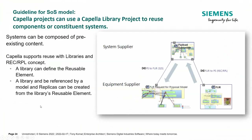The next guideline: Capella projects can use the Capella library project to reuse components or constituent systems. This is really important when you have content you want to reuse. In this example, I take the payload model and develop a portion of it for the FLIR that supports the use case of performing the recon. I create that and then say, 'I have this model and I need this — it could be transferred to the equipment supplier.' In this particular example, I'm going to go and look for a FLIR that meets the need.